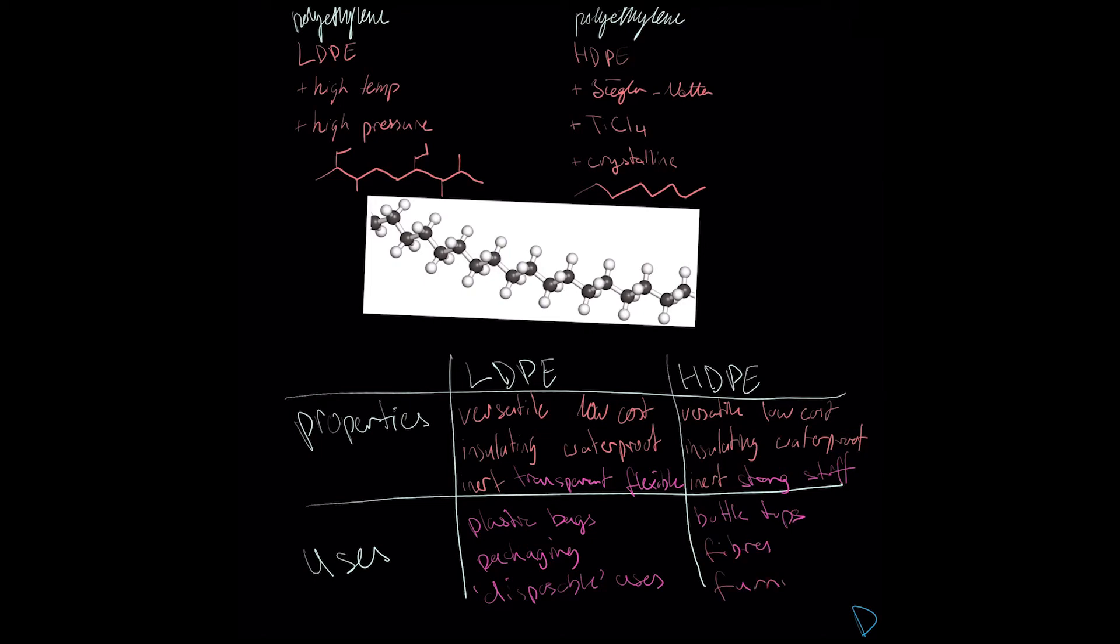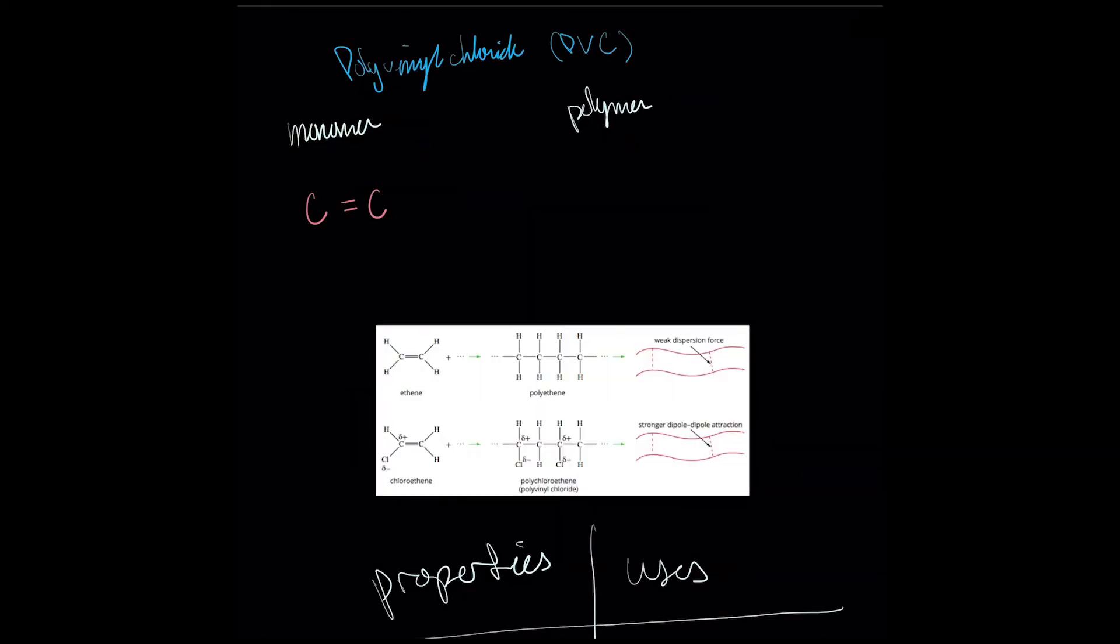Polyethylene is very versatile, but many applications require more specialized properties. One of the ways to change the properties of a polymer is to substitute one or more of the ethene's hydrogens with another functional group. Chloroethene, which used to be called vinyl chloride, can be polymerized to polyvinyl chloride, or PVC.